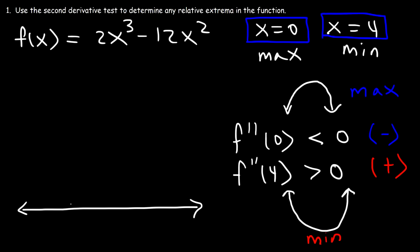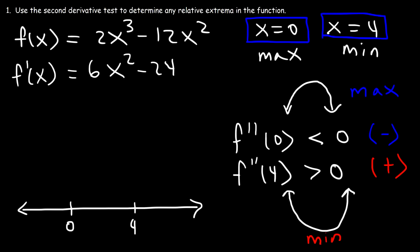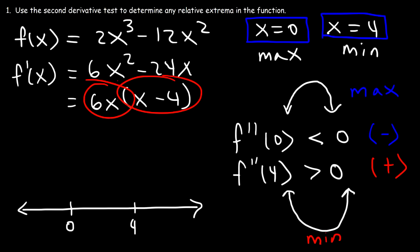Now let's confirm our answer using the first derivative test. We put the critical numbers on the number line and rewrite the first derivative in factored form: 6x(x - 4). If we plug in a test point greater than 4, like 5: 6(5) is positive and 5 - 4 is positive, so the result is positive.